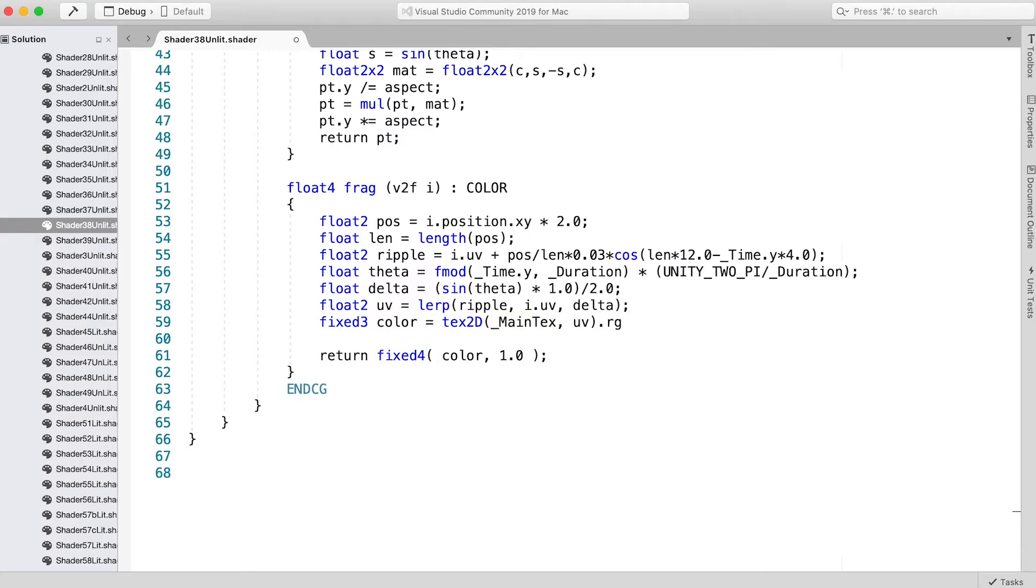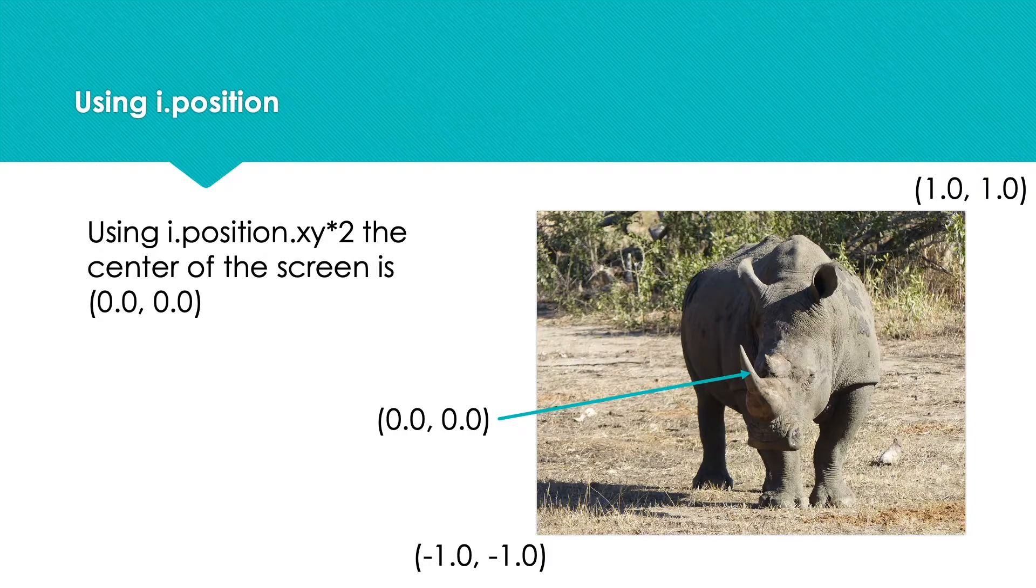The float2 pos is set to the value i.position.xy times two, then we save the length of the vector as the variable len. It's important that the center of the screen in this coordinate space is at zero zero. We can do this by using the varying i.position that ranges from -0.5 to 0.5 for our quad. By multiplying this by two, we're in the range -1 to 1.